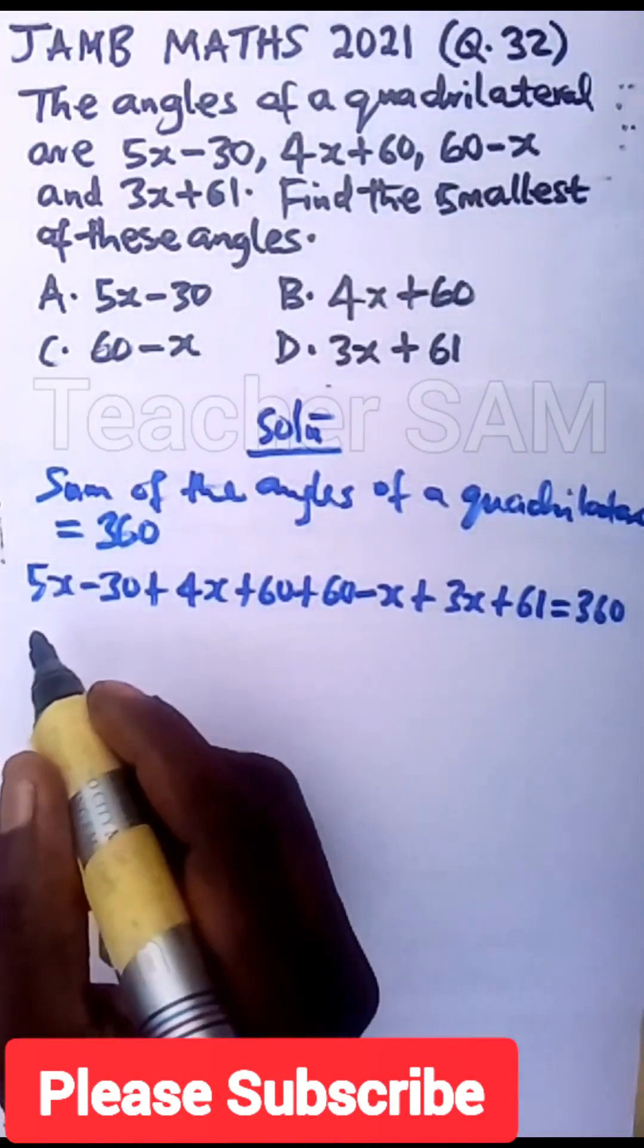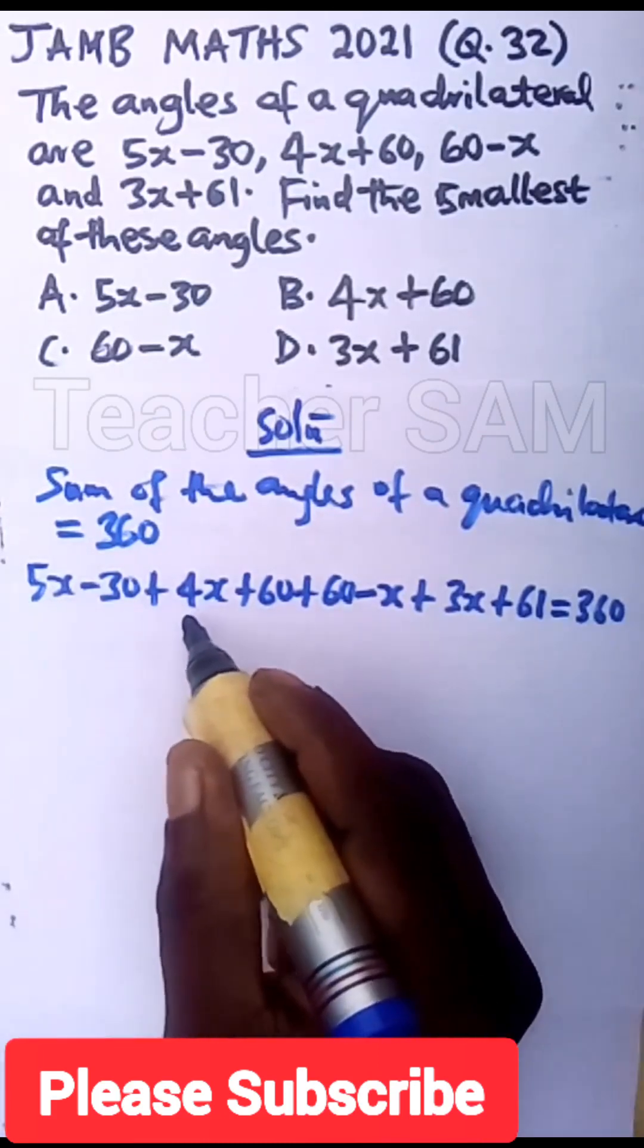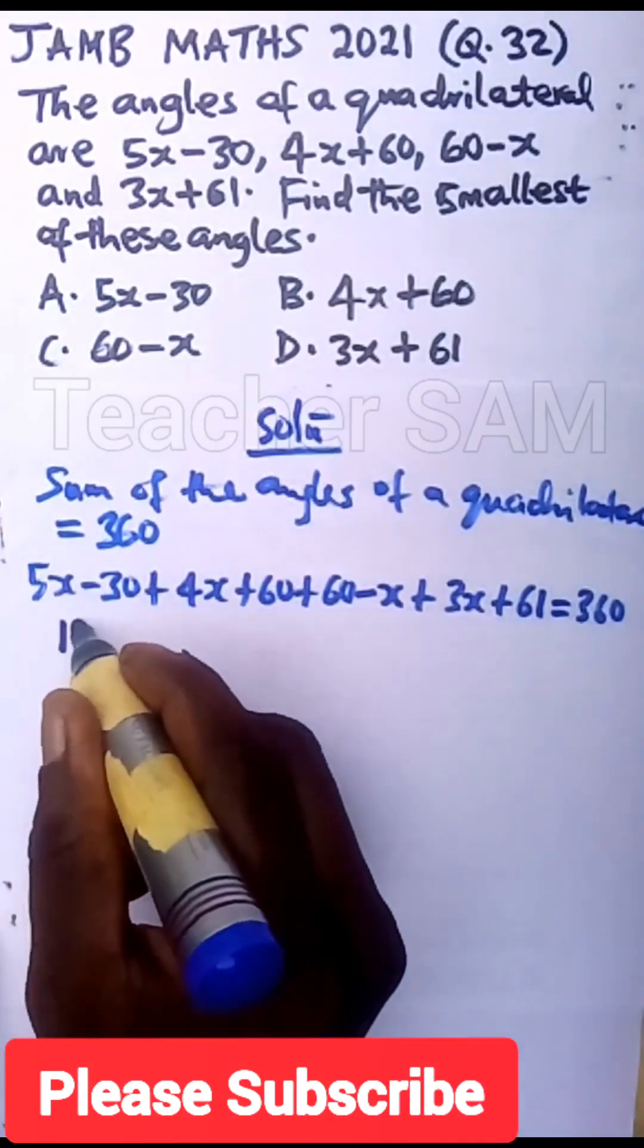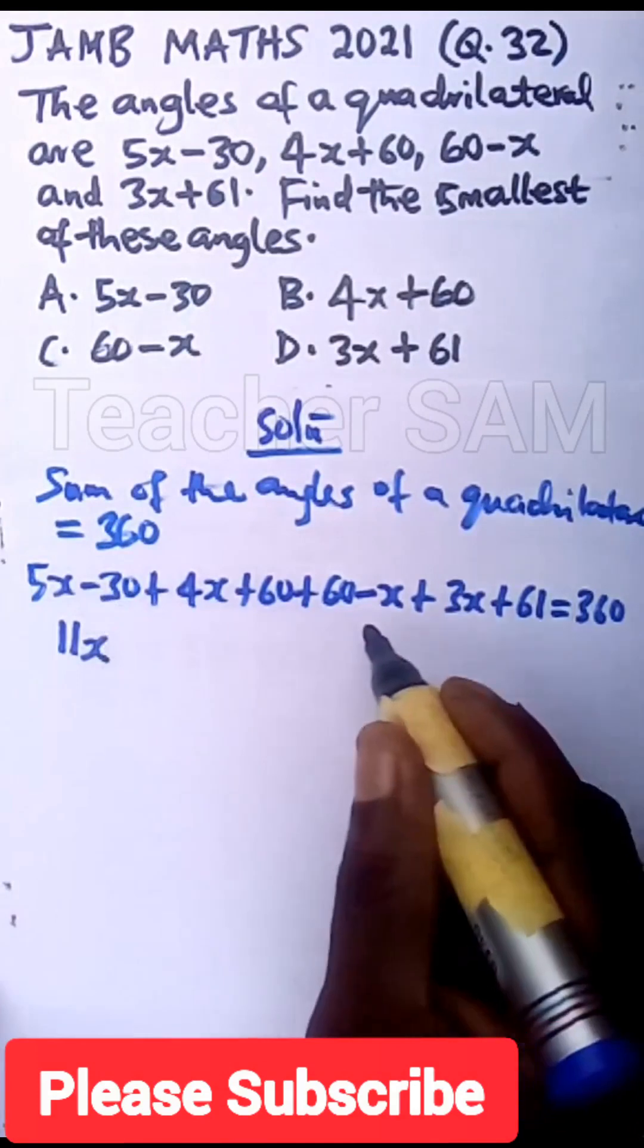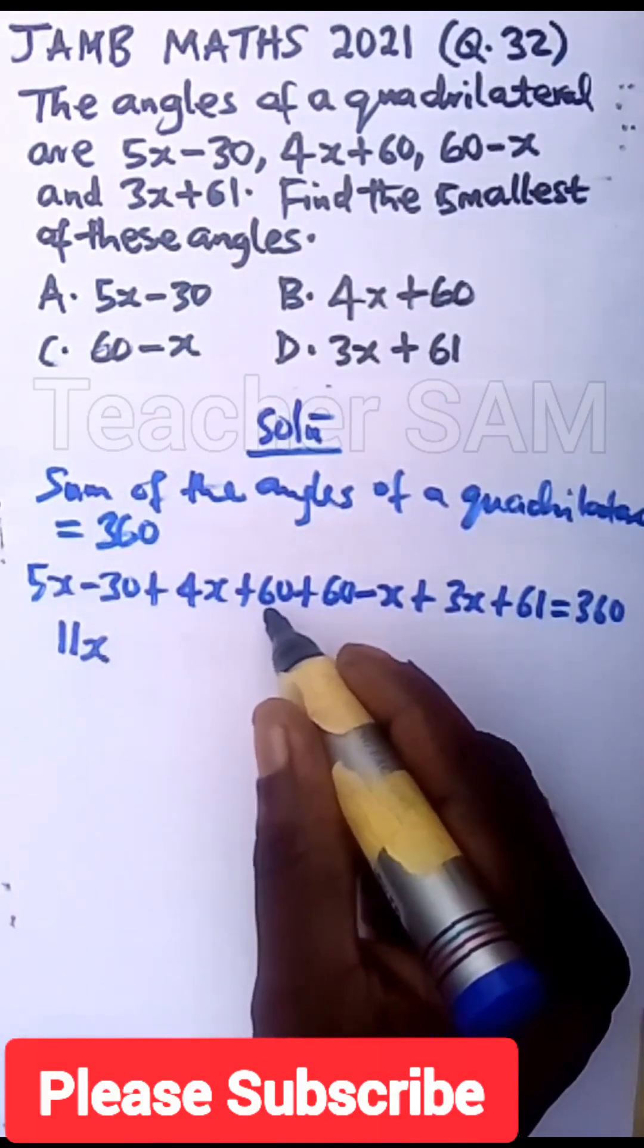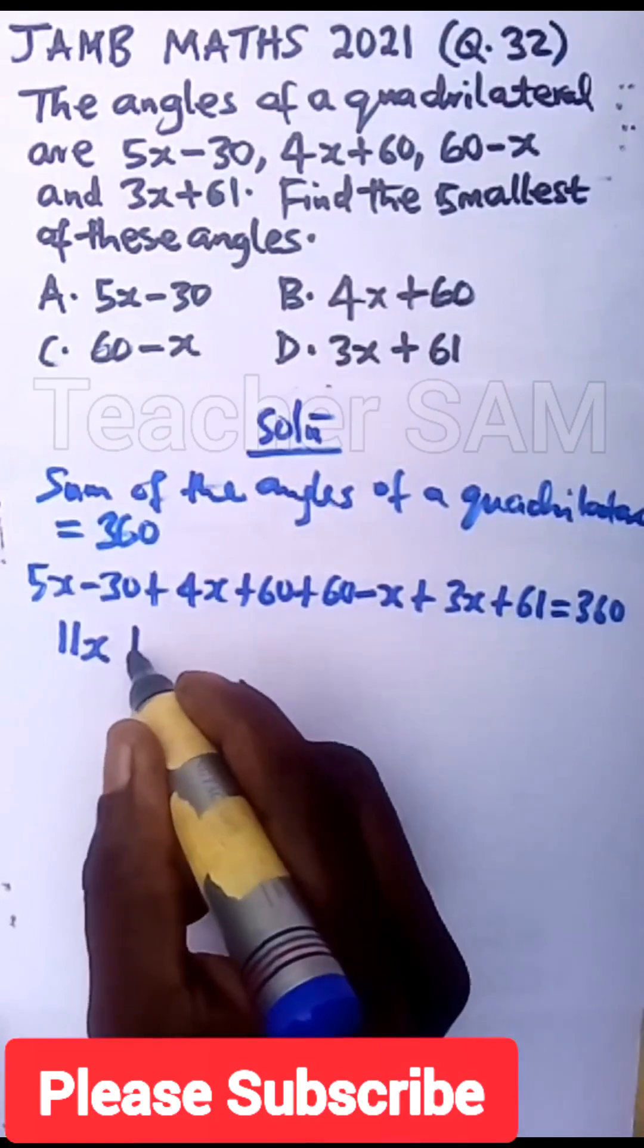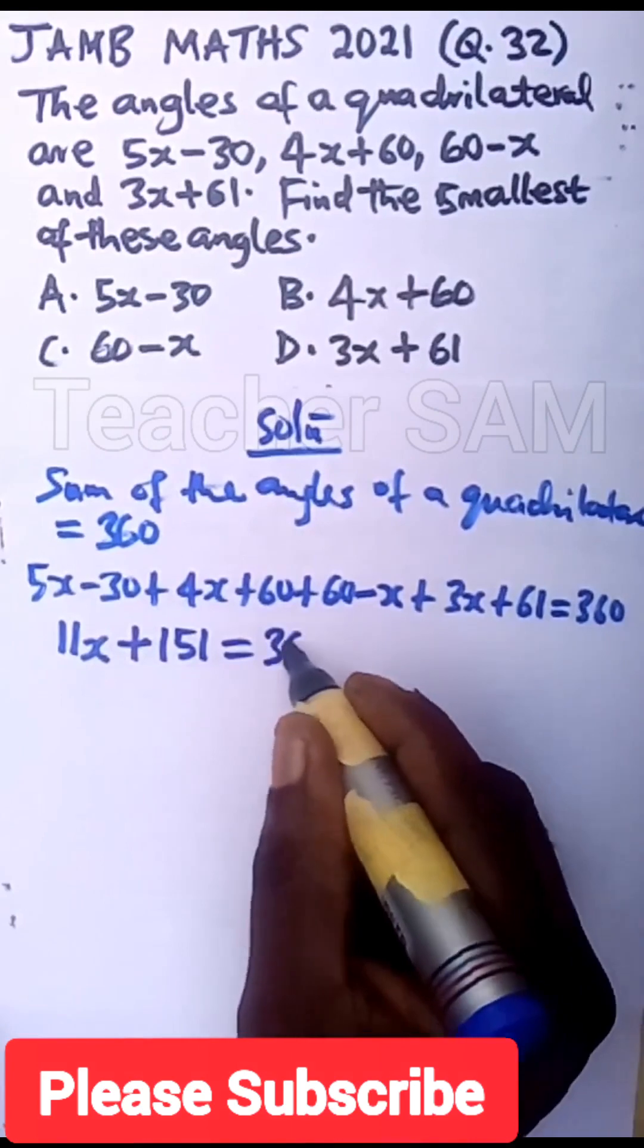Now if you do this, 5x plus 4x will give us 9x. 9x minus x will give us 8x. Now 8x plus 3x will give us 11x. Do the same thing here. Minus 30 plus 60 plus 60 here will give us 30. 30 plus 60 will give us 90. 90 plus 61 will give us plus 151. So that will be equal to 360.